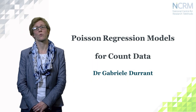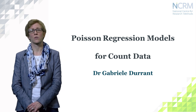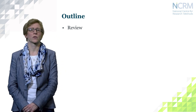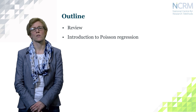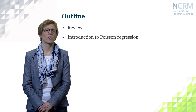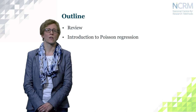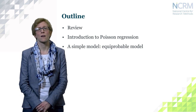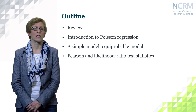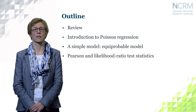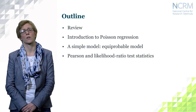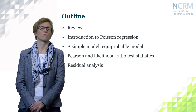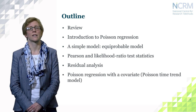Today I'm going to talk about Poisson regression models for count data. I will first give a brief review of regression analysis, then introduce Poisson regression looking at a simple model without a covariate — the so-called equiprobable model. I will then assess this model with the Pearson chi-square test and the log likelihood ratio test statistics, look at residual analysis, and then introduce the Poisson regression model with a covariate — basically a Poisson time trend model.